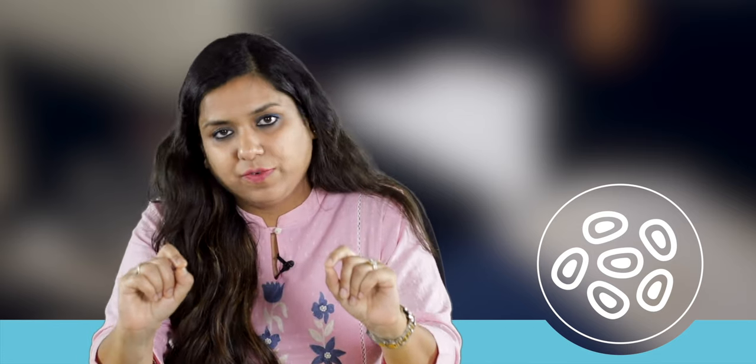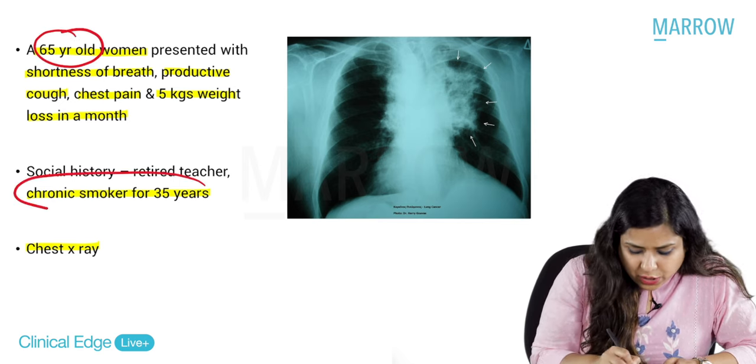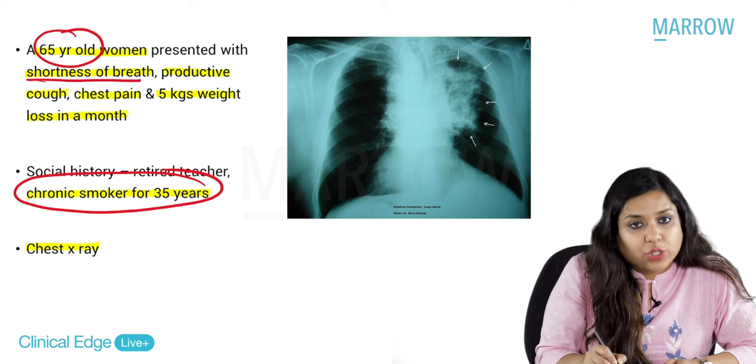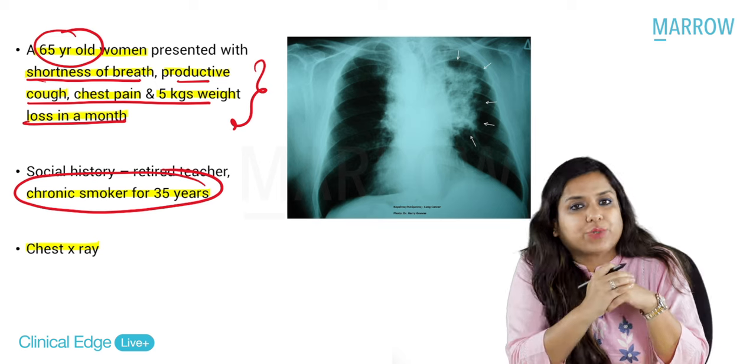A keyword is that word which will help you to reach a particular diagnosis. Once you make a diagnosis on a particular patient, the further thing is very easy. For that you will require keywords like the age of the patient, the history, the examination findings, and the investigations. In this question, the patient is an elderly woman with smoking for 35 years. The history has shortness of breath, productive cough, chest pain and 5 kg weight loss in a month.